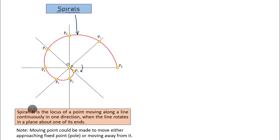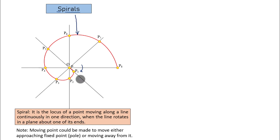Now you can go ahead and read the definition — it will be very easy to learn. A spiral is basically the locus of a point moving along a straight line, continuously in one direction — moving outwards or away from the pole — as the line rotates in a plane about one of its ends. The screen on which you are watching this video is a plane and all of this activity is happening on that plane.